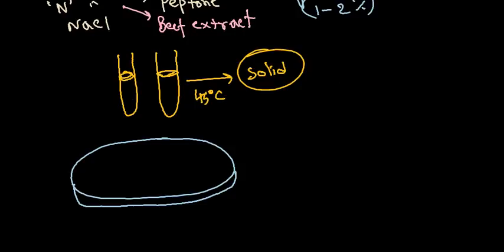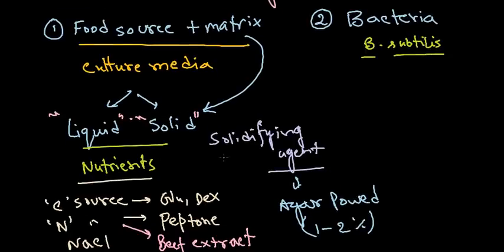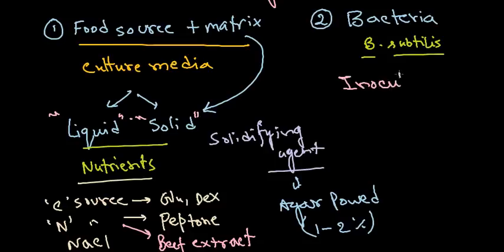So we can take either liquid media or solid media for the growth of microorganisms — both contain the same type of nutrients for bacterial growth. Besides the media, we also require the bacteria, for example Bacillus subtilis or E. coli. What you need is a bacterial inoculum. Inoculum means the load of bacteria.